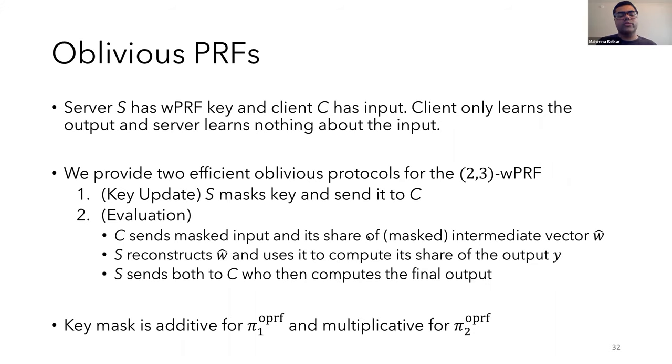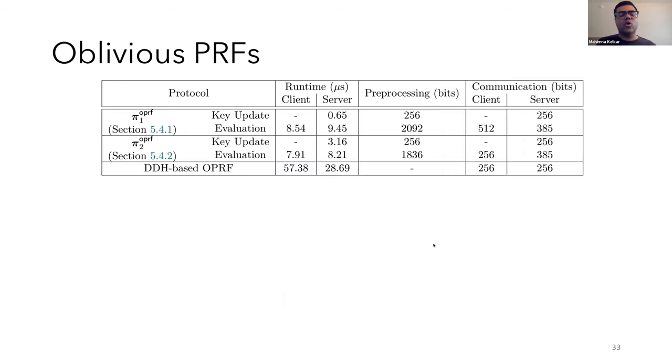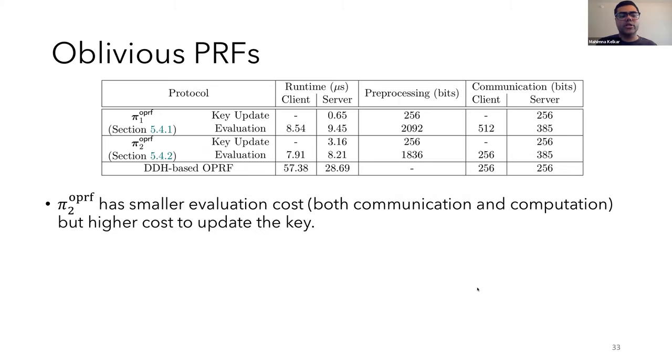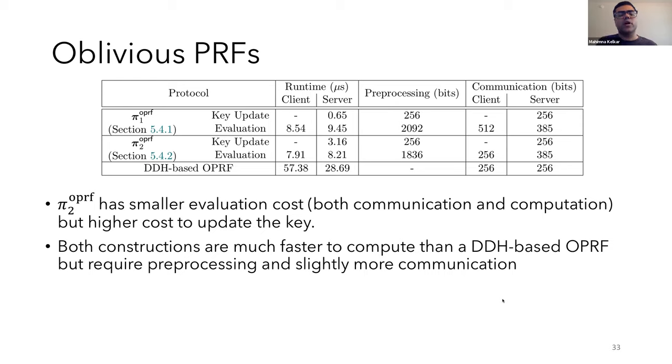Our two protocols only differ in how the key gets masked. In the first protocol, the mask is additive. And in the second protocol, the mask is multiplicative. So we compared our two OPRFs to each other as well as to the standard DDH-based OPRF. And the second OPRF has a smaller evaluation cost, both in terms of communication and computation, but a higher cost to update the key since it involves a matrix multiplication. But still, both of our constructions are much faster to compute than a DDH-based OPRF. They do require preprocessing and slightly more communication. But in fact, the highlight of our protocol is that they're faster than a single modular exponentiation or elliptic curve point multiplication. Plus, there's still room for hardware-based improvements so that the gain might be even higher.